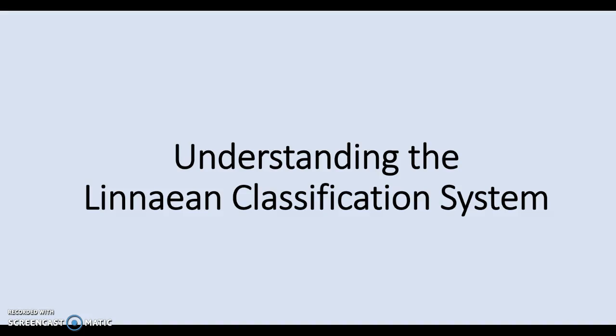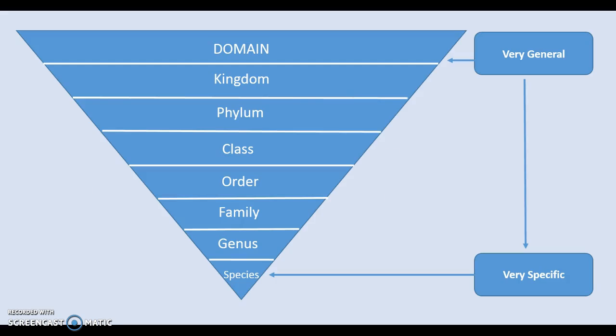In order to understand relationships between biological organisms, it's important to understand the Linnaean classification system. The Linnaean classification system reveals relationships between organisms partly because we use the classification system to group animals together into broad categories based on shared characteristics.